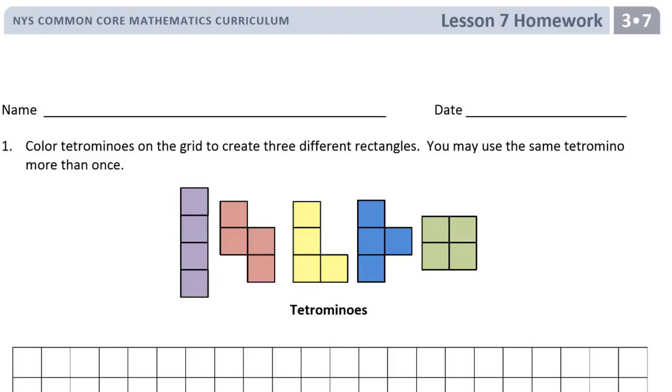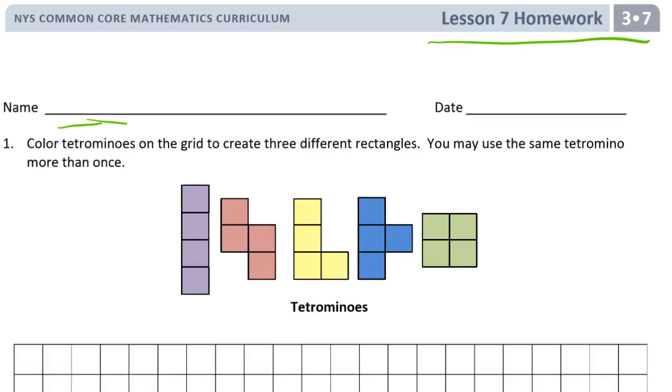Welcome to the homework for lesson seven. This is module seven of third grade. Put your name on here first. And this is coloring tetrominoes on the grid to create three different rectangles. You may use the same tetromino more than once. There's the examples of them.